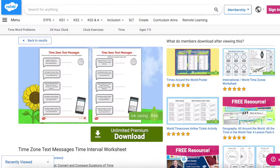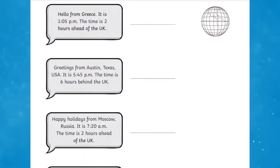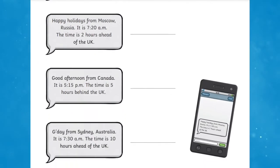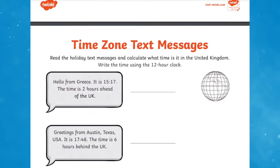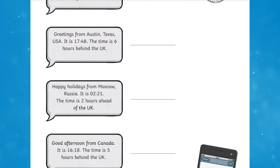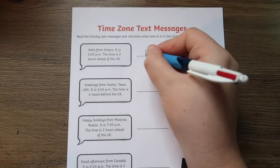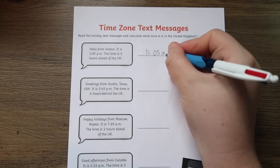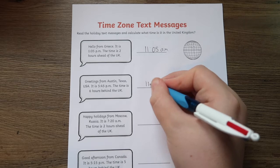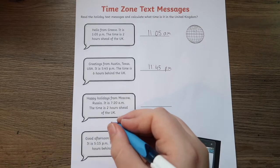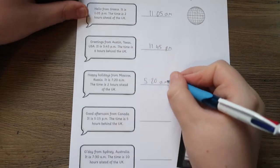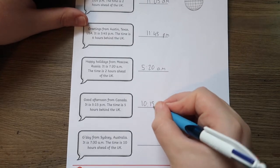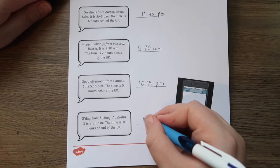The Time Zone Text Message Time Interval Worksheet supports children in Year 3 and 4 by calculating time durations with these text message challenges. Children can calculate and find the time difference between two places. The worksheet is differentiated for children who can use a 12 or a 24 hour clock. As this task has a summer theme, it's an excellent way to get children consolidating their time knowledge during the summer term.